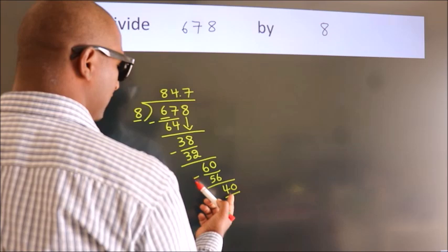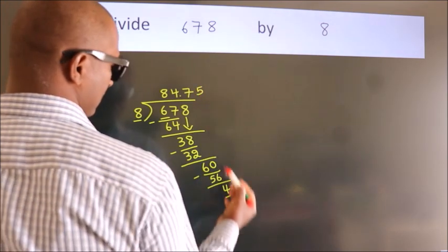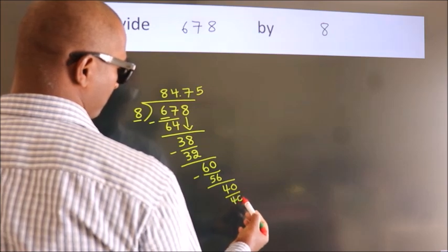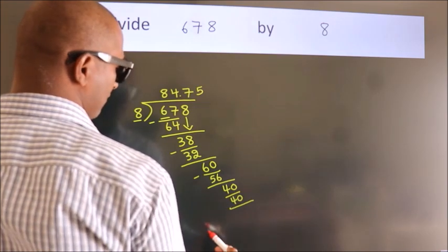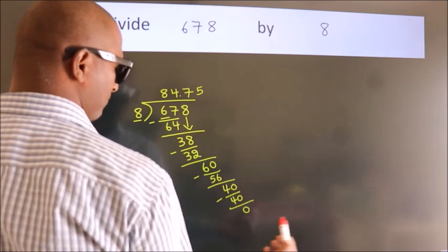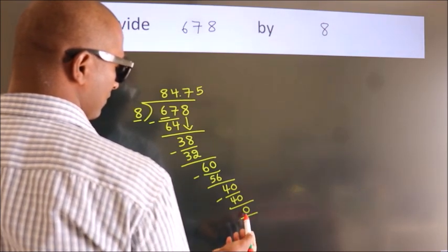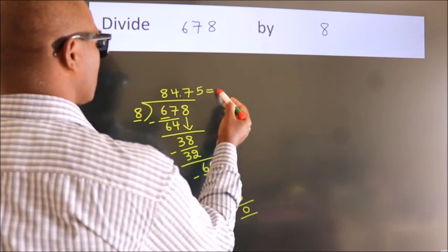When do we get 40 in the 8 table? 8 fives is 40. Now we subtract and get 0. We got remainder 0, so this is our quotient.